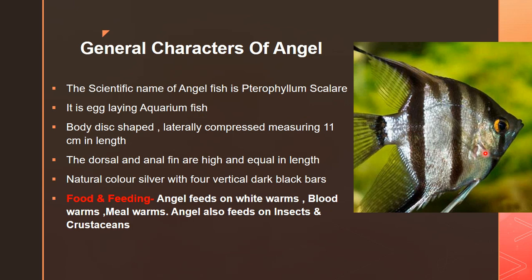Regarding the body: it is dish-shaped, compressed, and measures up to 11 centimeters in length. The dorsal and anal fins are high and have equal length. On my right hand side I am pointing to the dorsal fin. The caudal fin is triangular and the ventral fin is elongated. Regarding color, the angelfish has different colors — brown, greenish, black, yellow, and more — with silvery and vertical dark black bands on the body. It requires a deep tank with tall plants for breeding.